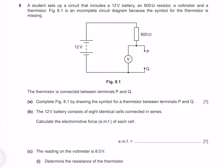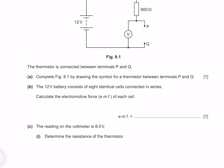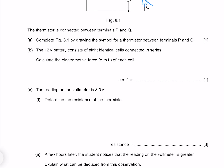A student sets up a circuit with a 12 volt battery, an 800 ohm resistor, a voltmeter, and a thermistor. Figure 8.1 is an incomplete circuit diagram — complete it by drawing the symbol for a thermistor between terminals P and Q. The symbol for a thermistor is a resistor with a hockey stick going through it. The 12 volt battery consists of 8 identical cells in series — the EMF of each cell is 12 divided by 8, which gives me 1.5 volts.